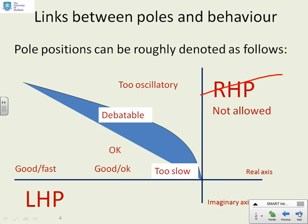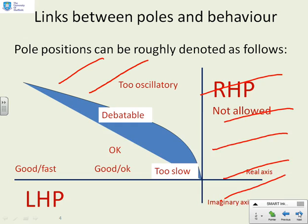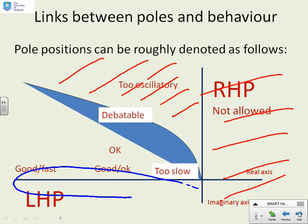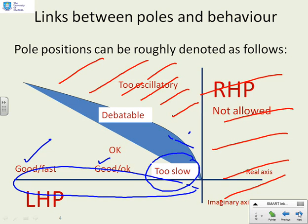Clearly we don't want poles in the right half plane because that gives divergent behaviour — clearly not allowed. We also don't want poles which have a large imaginary part, even if they're convergent, because this suggests you might be too oscillatory. What we really want is poles down near the real axis if possible, and further to the left, because further to the left means fast. Some way to the left is okay, but too near the imaginary axis gives slow behaviour, which we don't like.